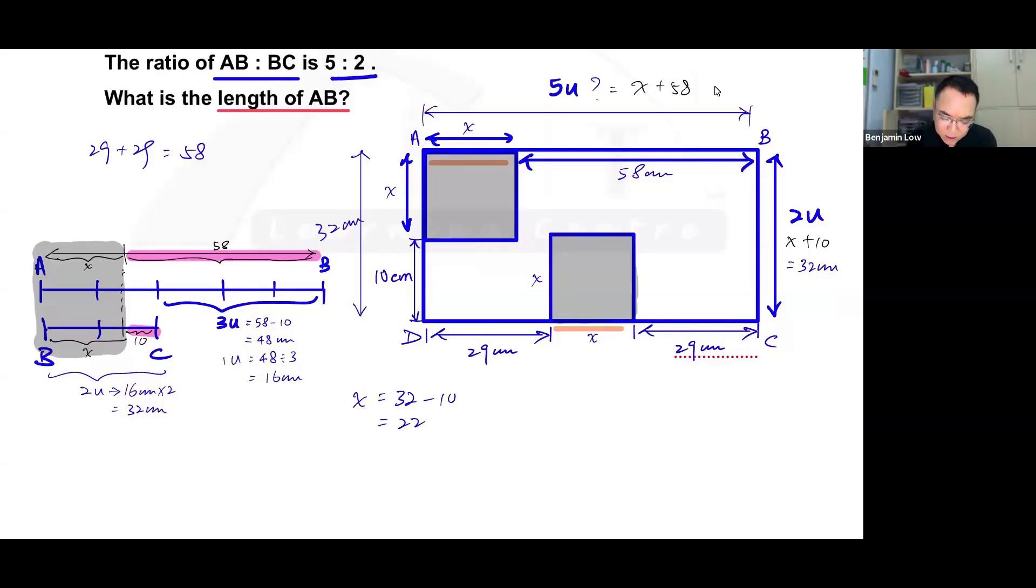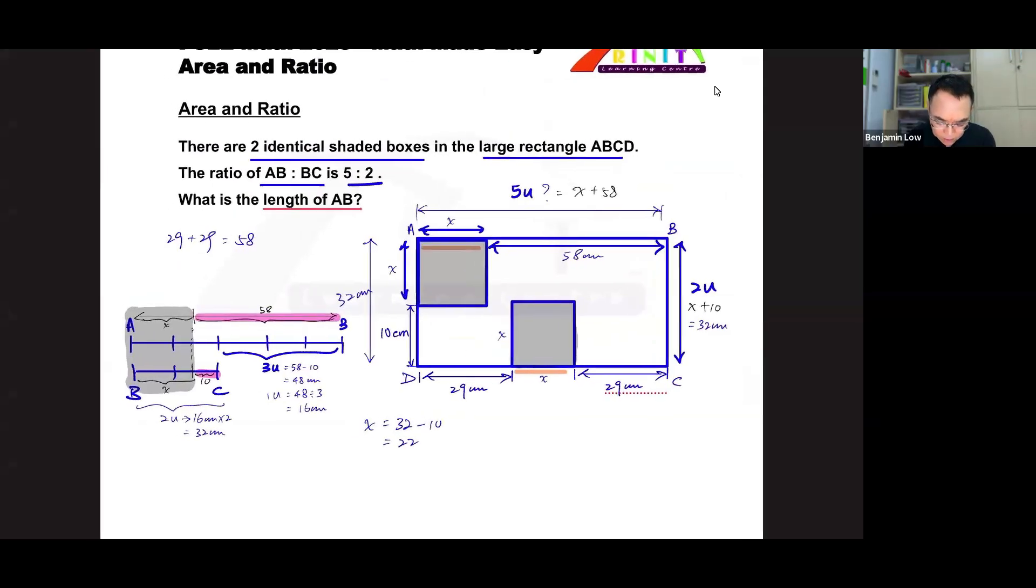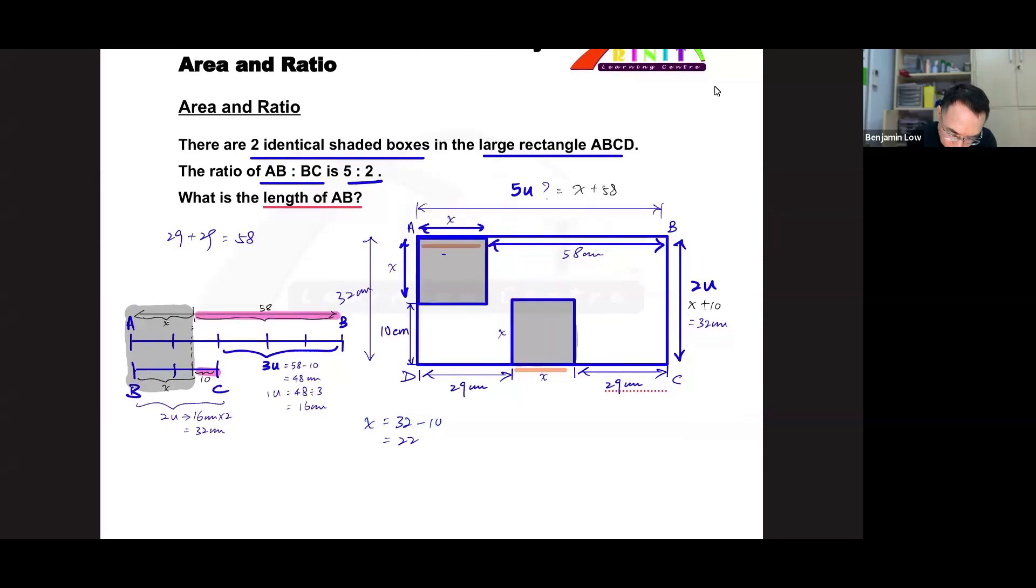And the question is, what is the length of AB? So to answer the length of AB, which means I'm going to find the five units here, which is made up of 58 plus x. So 58 plus x, and since x is 22, then it will be 58 plus 22. Okay, so that will be the answer to the question. AB is 58 plus 22 equals to 80. And I'm going to assume it's centimeters for this question. And that is the answer to the question.